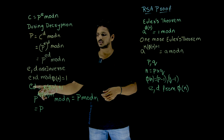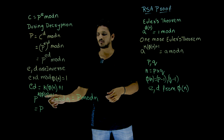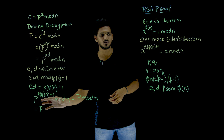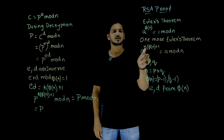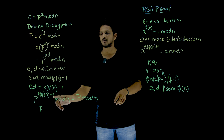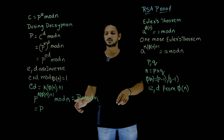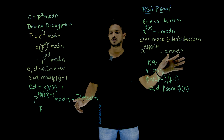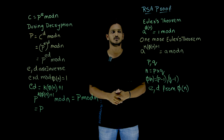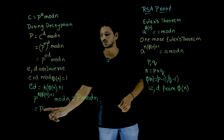Substituting in place of e·d, we can write: p to the power of k multiplied by phi of n plus 1, modulus n. This is the same as the second version of Euler's theorem: a to the power k times phi of n plus 1, mod n equals a mod n. So p to the power k·phi(n)+1 mod n equals p mod n, which gives us p — the original plaintext.